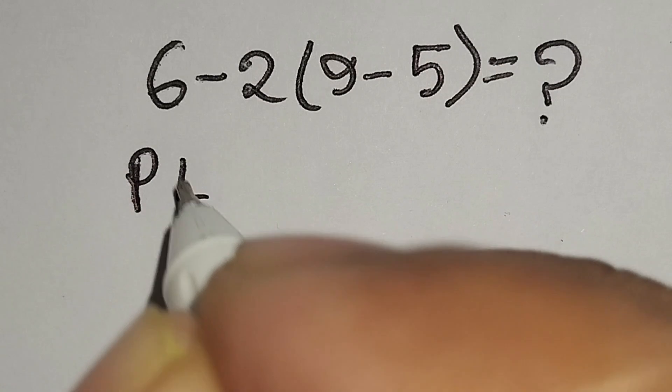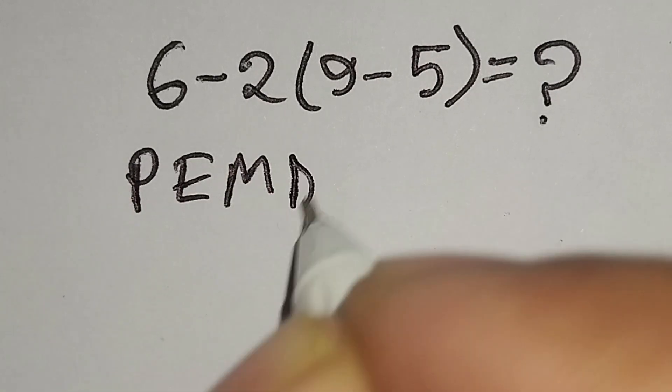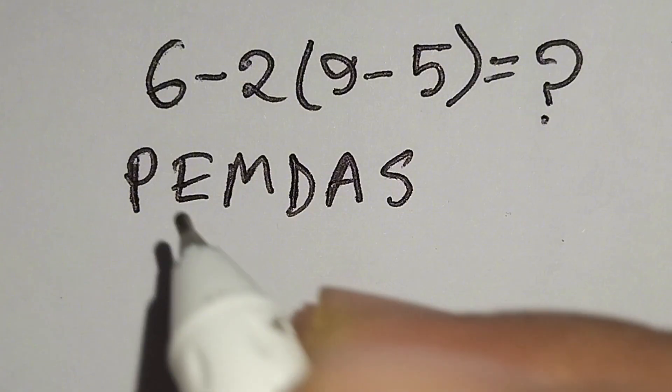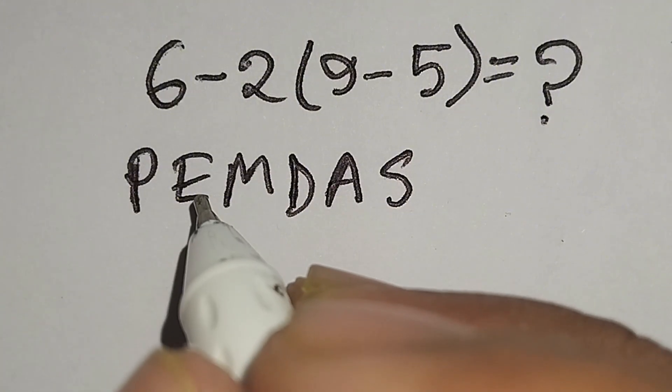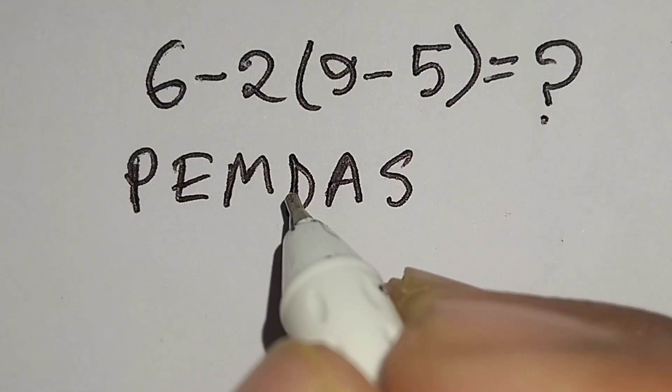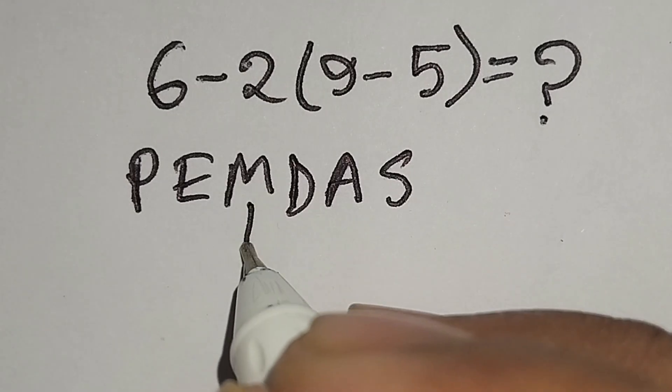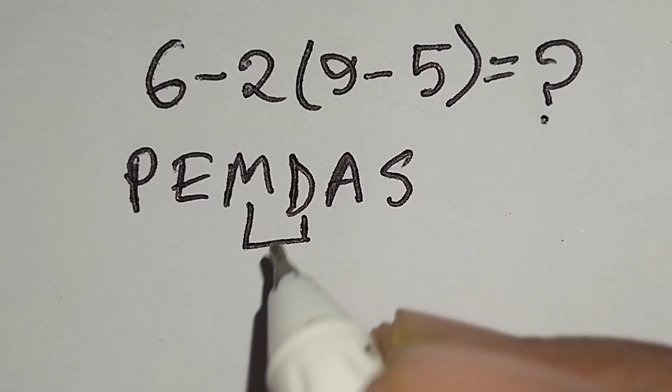Here, PEMDAS. According to PEMDAS rule, at first we have to work with Parenthesis, then Exponent, then Multiplication or Division, then Addition or Subtraction. Remember, multiplication and division have same priority. For this we have to work left to right.